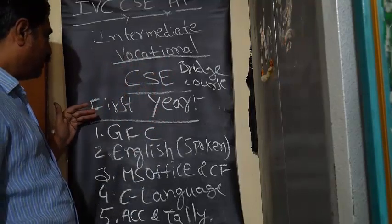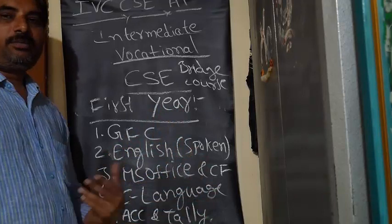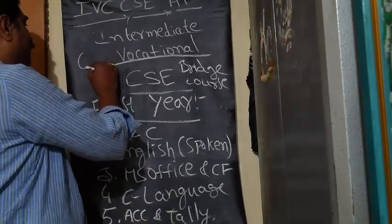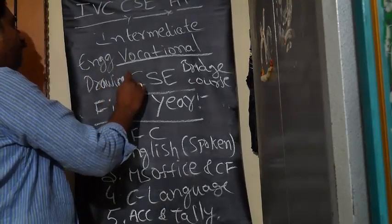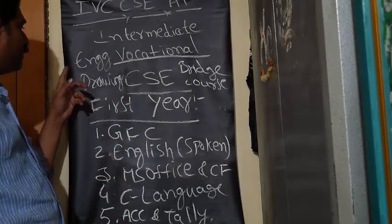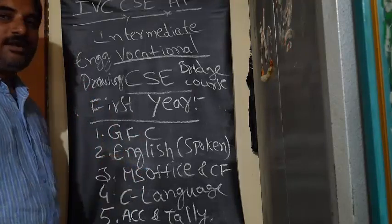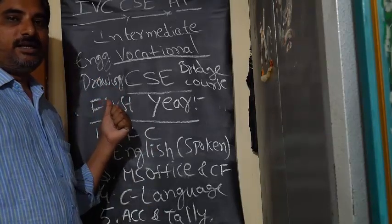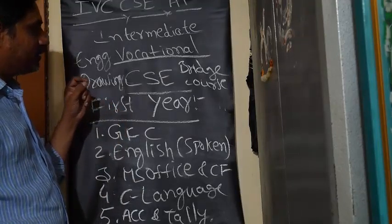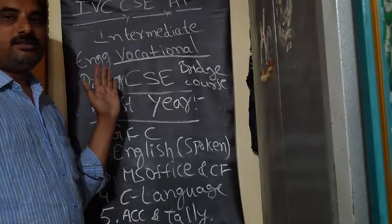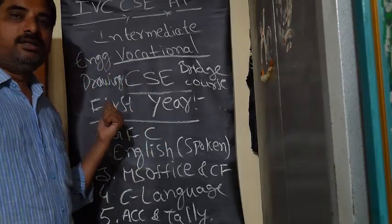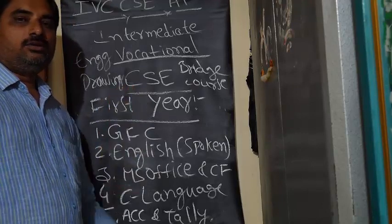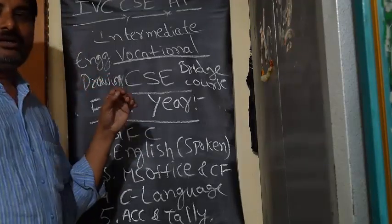Additionally, alongside these five subjects, we have three practicals: MS Office practical, Programming in C practical, and Engineering Drawing. You must write Engineering Drawing, MS Office, and C Language practicals. That is about first year computer science and engineering at intermediate vocational level. All over India, this same curriculum is followed — the procedure of joining, practicals, and subjects are the same across India, though the syllabus may vary slightly.